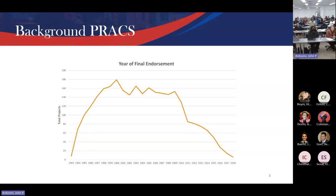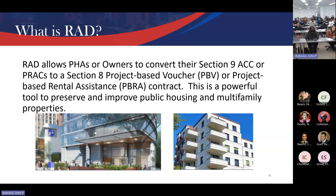In the 1990s, HUD started the PRAC program. PRAC stands for Project Rental Assistance Contracts. These contracts started around 1992-1993 when Congress allowed for the building and renovation of homes for the elderly. These PRAC contracts support homes for the elderly, and PRAC owners are largely small and large non-profits around the country — that could be a church or a huge non-profit organization.